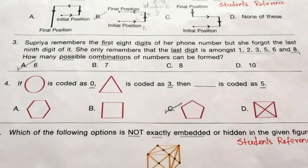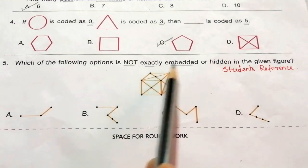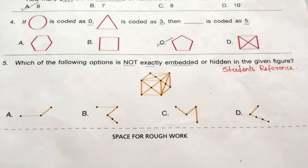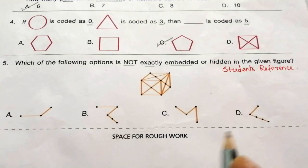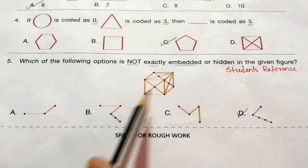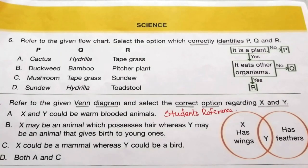Question 5: Which of the following options is not exactly embedded or hidden in the given figure? The correct answer is D — it is not given in the figure. Option A is embedded, B is embedded, and C is embedded, so our answer is D. The next topic is Science.